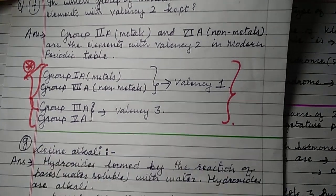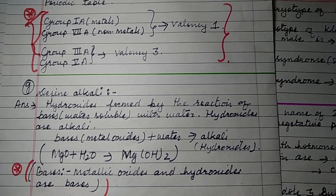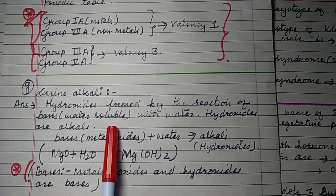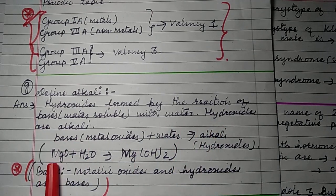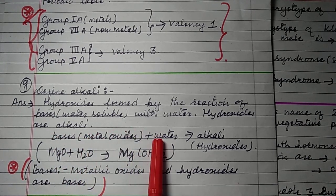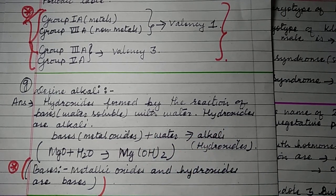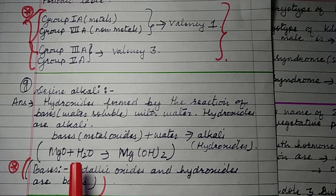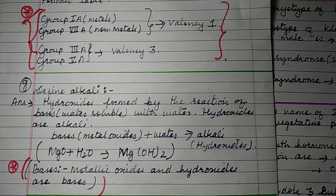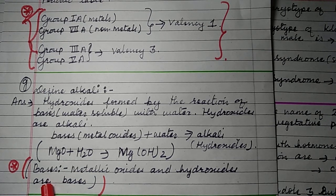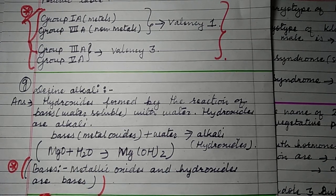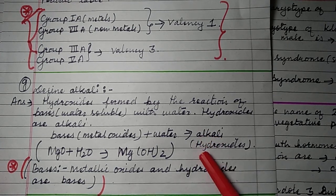Question 1G: Define alkali. Hydroxides formed by the reaction of water-soluble bases with water are called alkali. For example, magnesium oxide (metal oxide) plus water gives magnesium hydroxide — magnesium hydroxide is an alkali. A similar question: define bases. Metallic oxides and hydroxides are bases. Alkali is also a kind of base.